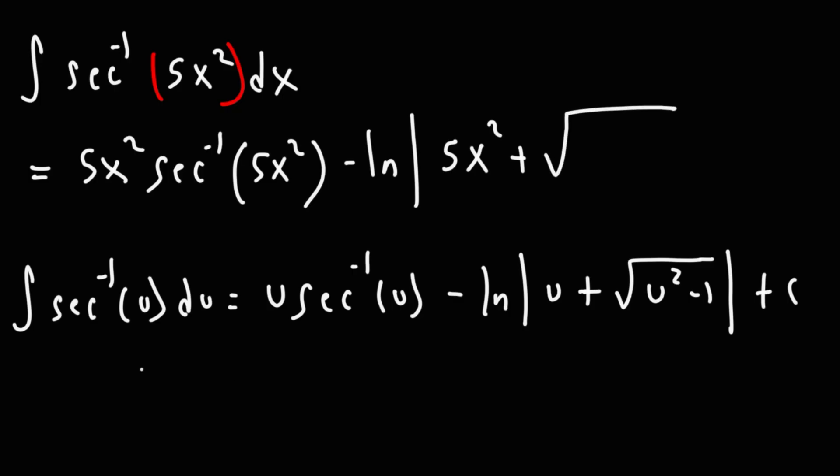Now, this part is different. So we have 5x squared, squared. 5 squared is 25, x squared is going to be x to the fourth. So we're going to have 25x to the fourth minus 1, and then plus c.